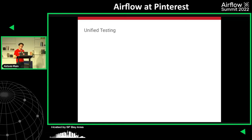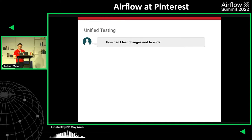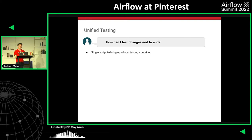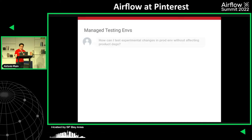Hi, this is Dinghong from Pinterest. Let's talk about features we've created over the past year to empower users with better debuggability. A very common case is that users want to test changes end-to-end to cover things that can't be covered by unit tests. We provide a simple single script to bring up a local testing container with the latest infra code, giving users their own Spinner system with almost the same functionality as the production environment.